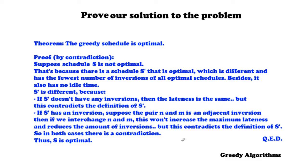This greedy algorithm is fast and produces the optimal schedule — quite nice. To summarize: we described the problem, came up with a solution and did an example, discussed the pseudocode and time complexity analysis, and proved that the greedy schedule is optimal based on the fact that interchanging an adjacent inversion does not increase the maximum lateness.